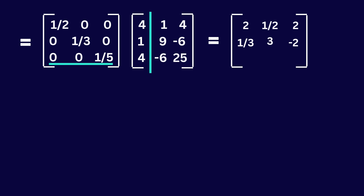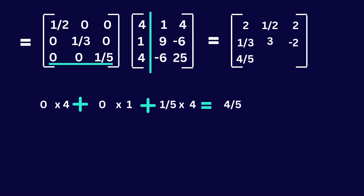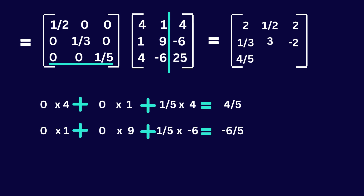Consider the third row of the first matrix and the first column of the second matrix: 0 multiplied by 4 is 0, 0 multiplied by 1 is 0, and 1 over 5 multiplied by 4 is 4 over 5 — I will put 4 over 5 here. Then consider the third row of the first matrix and the second column of the second matrix: 0 multiplied by 1 is 0, 0 multiplied by 9 is 0, and 1 over 5 multiplied by minus 6 is minus 6 over 5 — so our answer is minus 6 over 5, I will put it here.